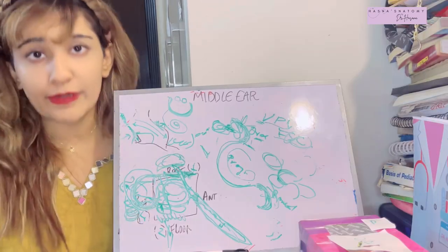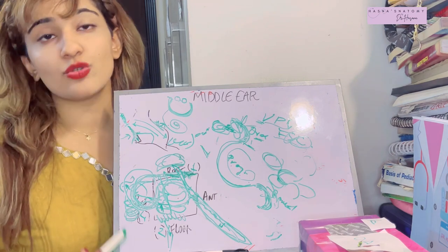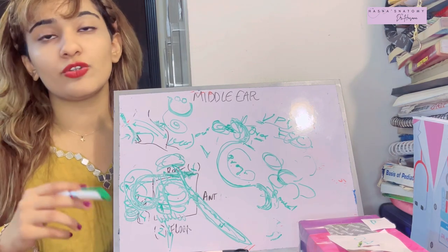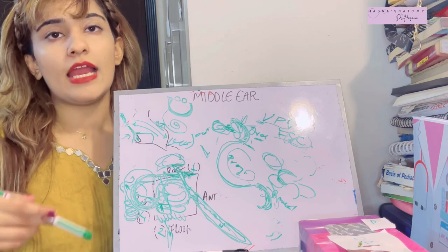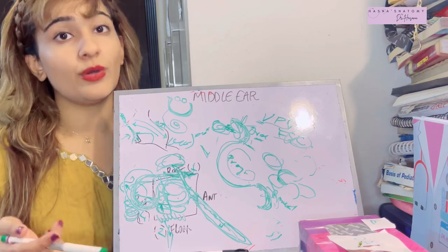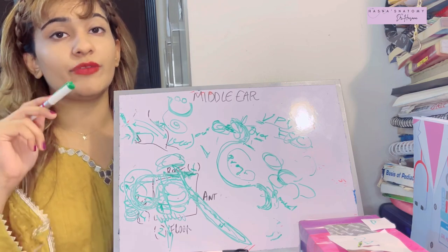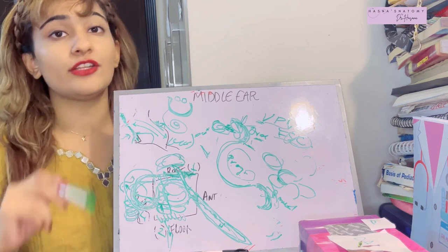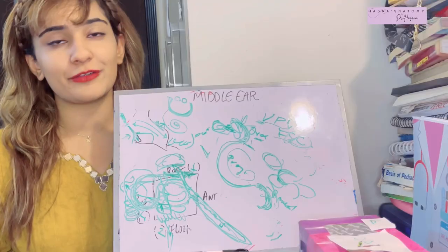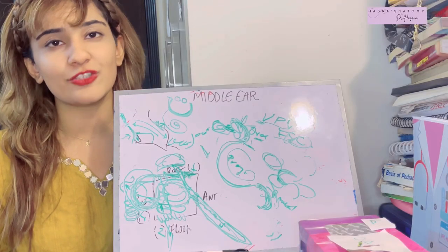Since the stapedius is supplied by the facial nerve, damage to the facial nerve causes the stapedius to become inactive. The stapedius normally dampens sound to prevent it becoming too loud; without it, sounds are heard as excessively loud — a condition known as hyperacusis. A fracture of the roof causes CSF leakage through the ear. Mastoid abscesses are approached surgically through the suprameatal triangle, with care taken to avoid injuring the facial nerve.